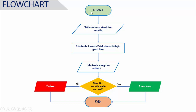The flowchart starts with the Start button, then 'Tell students about the activity,' then 'Students have to finish the activity in the given time,' then 'Students started doing the activity.' The decision point is 'Was the activity done on time?' — if yes, it's a success; if no, it's a failure. Then the process ends.